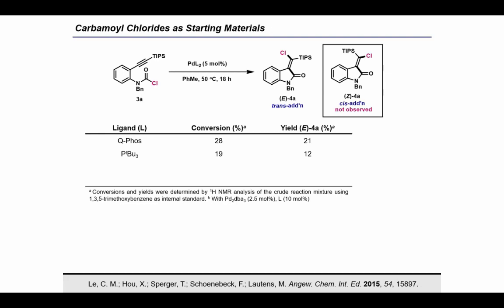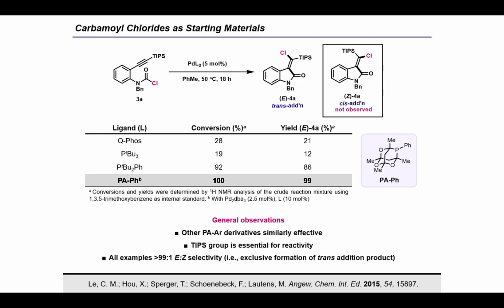So we began our optimization by testing our standard carbohalogenation catalyst in the chlorocarbamoylation reaction. Both palladium-QFOS and palladium-triterphenyl phosphine gave poor conversion, but we were encouraged to find the formation of some product in the reaction. In both cases, the E-isomer was observed as the exclusive product, which would have to arise from a trans-addition process. Interestingly, when we switched to a less bulky ligand, we observed a drastic increase in reactivity with nearly full conversion and 86% yield of the product. Based on the success of the ditributylphenylphosphine ligand, I was prompted to test a phospho-adamantine ligand, which is similarly bulky but slightly more electron deficient due to the oxygens embedded within the adamantine cage. This ligand gave full conversion of the starting material and nearly quantitative yields of the desired product.